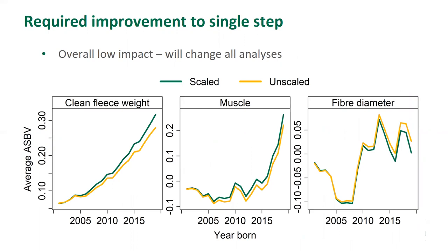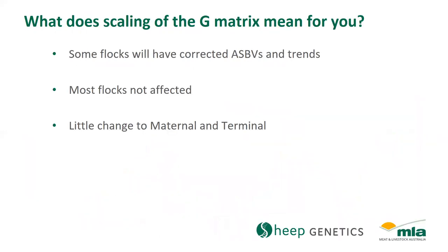This improvement affected other traits in the merino analysis. Fleece weight and muscle increase quicker, and fibre diameter decreases quicker over time. Scaling the genomic relationship will impact mostly flocks with recent genotyping. Some flocks had minor changes and we contacted the flocks which had the biggest change. We made this change to merino, maternal and terminal analysis, but the change affected merinos mostly because these flocks tended to have more shallow pedigree and lots of recent genotyping.